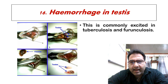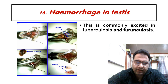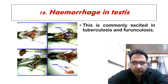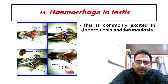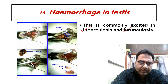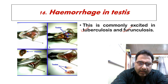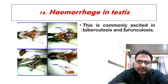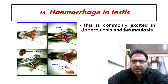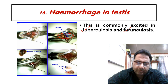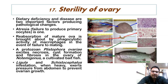Hemorrhage in the testis is commonly seen in tuberculosis and furunculosis. In these conditions hemorrhage occurs in the testis, and the fish is not able to reproduce or form gametes.